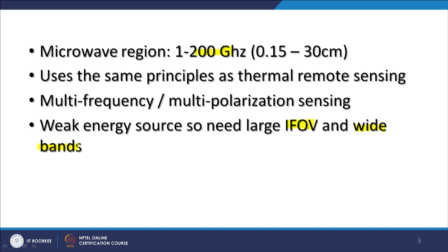Passive microwave remote sensing is more closely related to classical optical and thermal infrared sensors than to radar, because radar is active microwave whereas visible, infrared, and thermal infrared are passive. That is why it is specifically called passive microwave, not simple microwave radar remote sensing or active remote sensing.